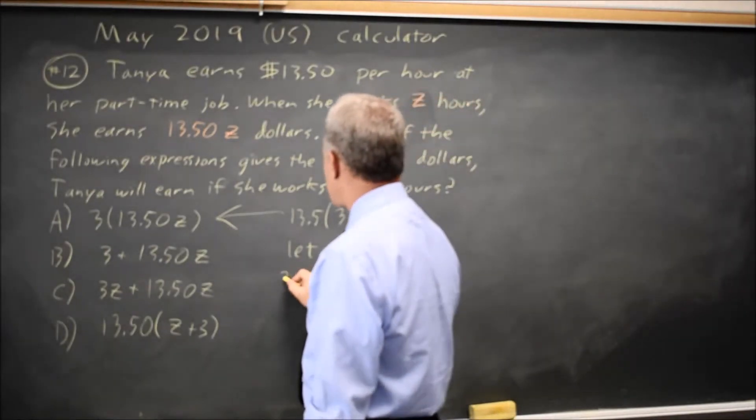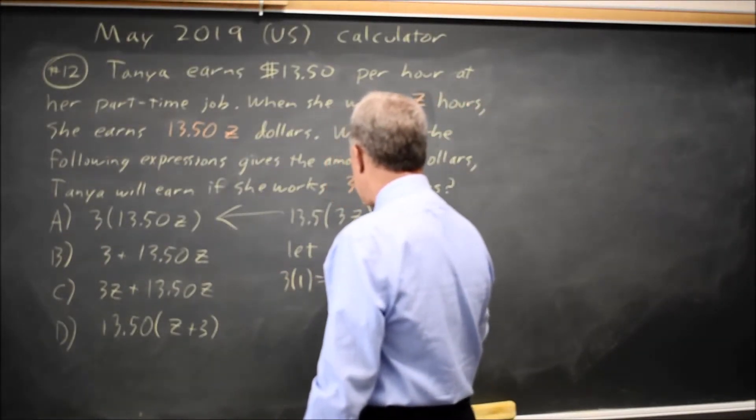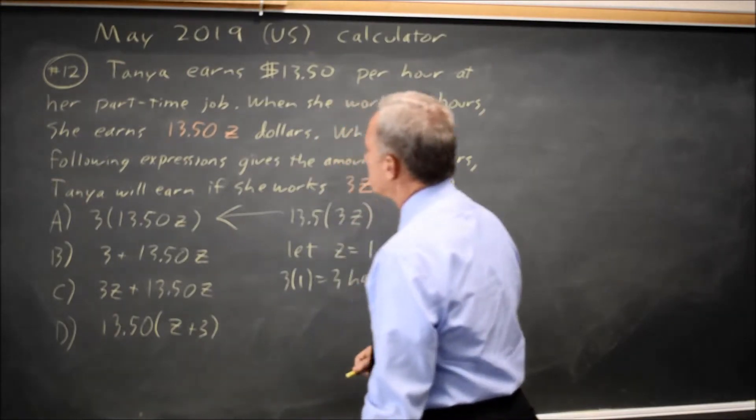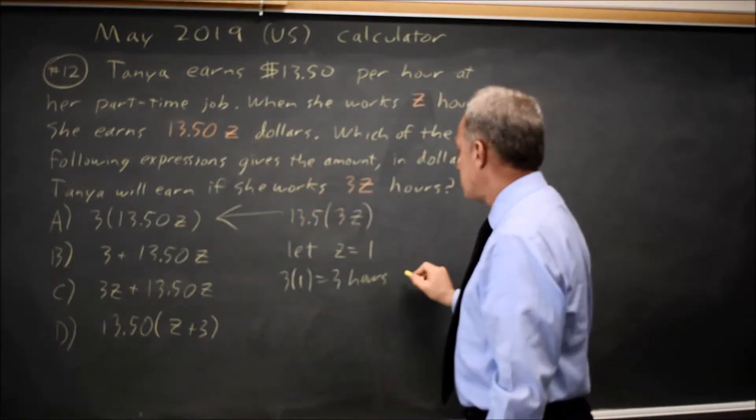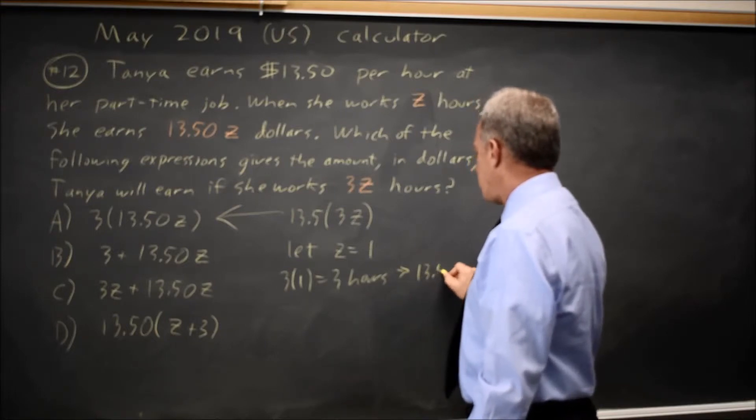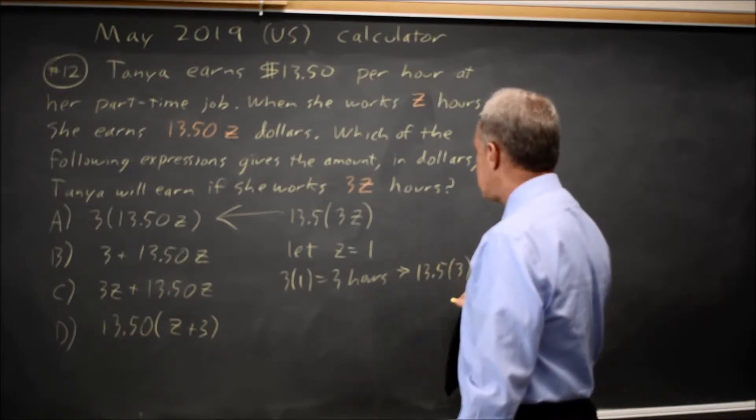that is 3 times 1 equals 3 hours. And the amount she makes in 3 hours is 13.5 times 3 dollars.